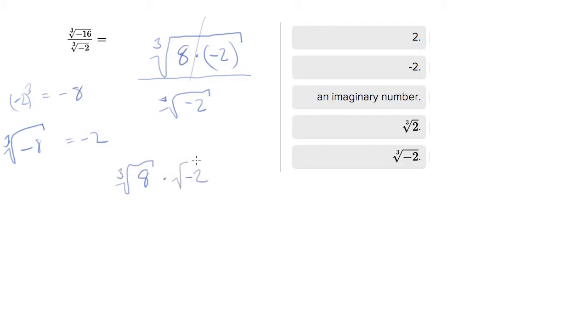When it started out looking really crazy, it turns out it's actually not that crazy at all, because the cube root of negative 2 cancels out in top and bottom. What we're left with is just cube root of 8, which is 2. So there's your answer.